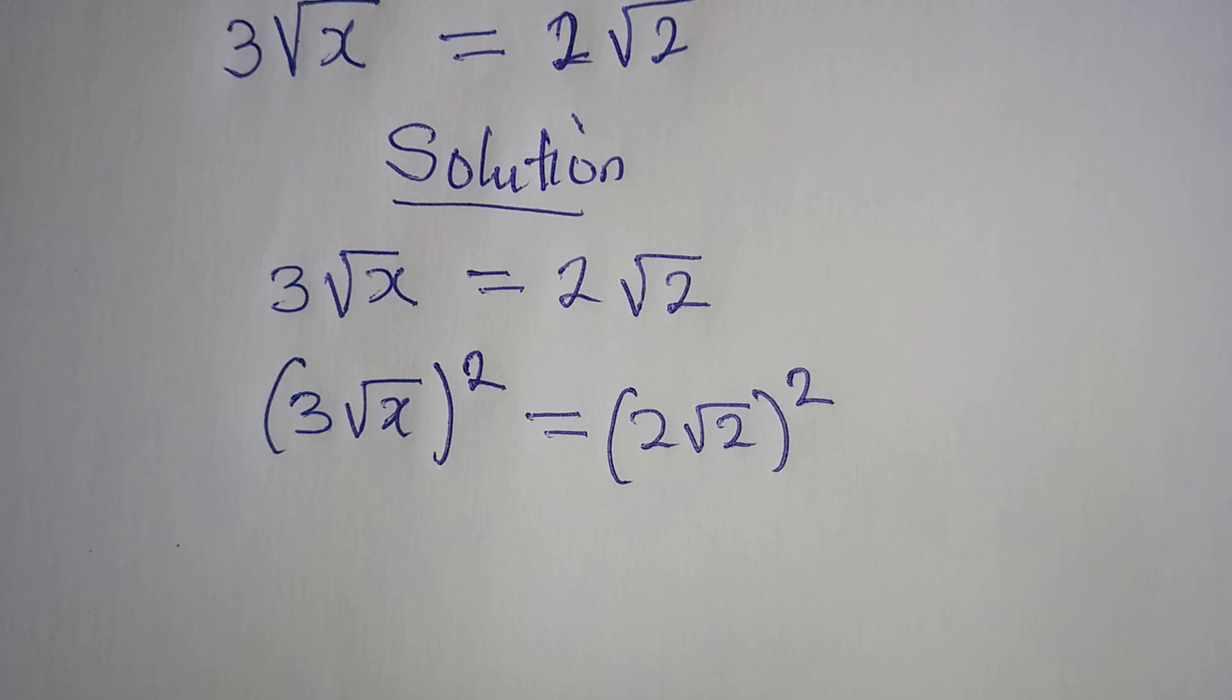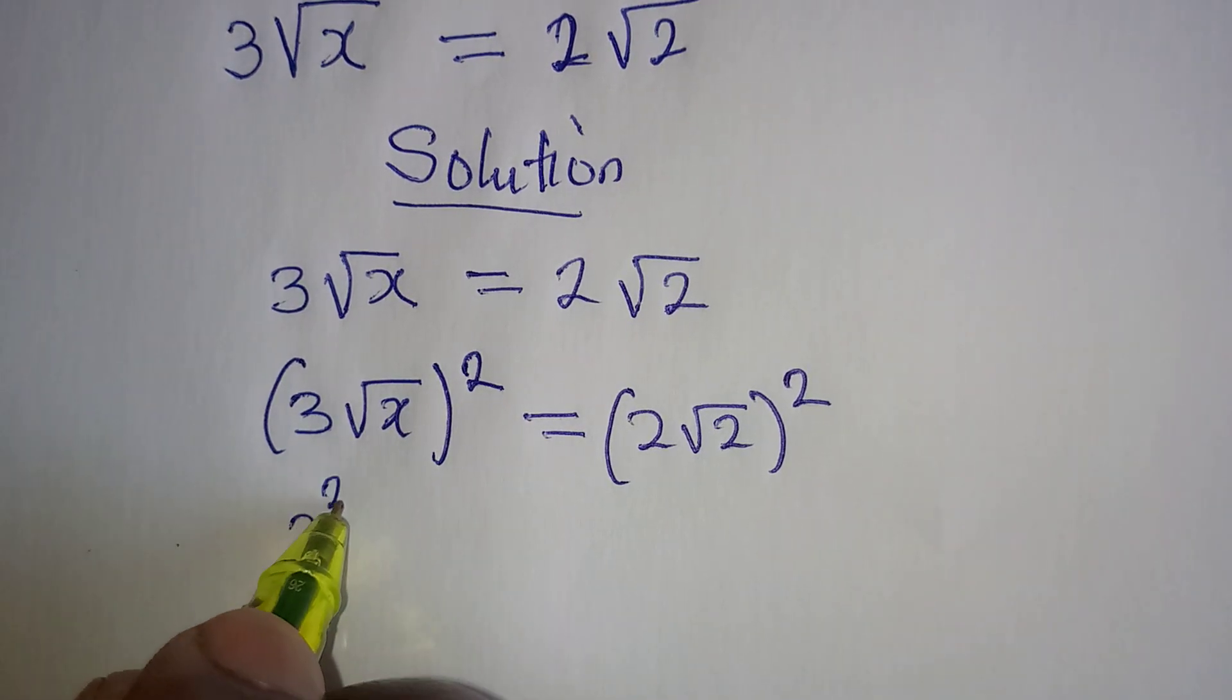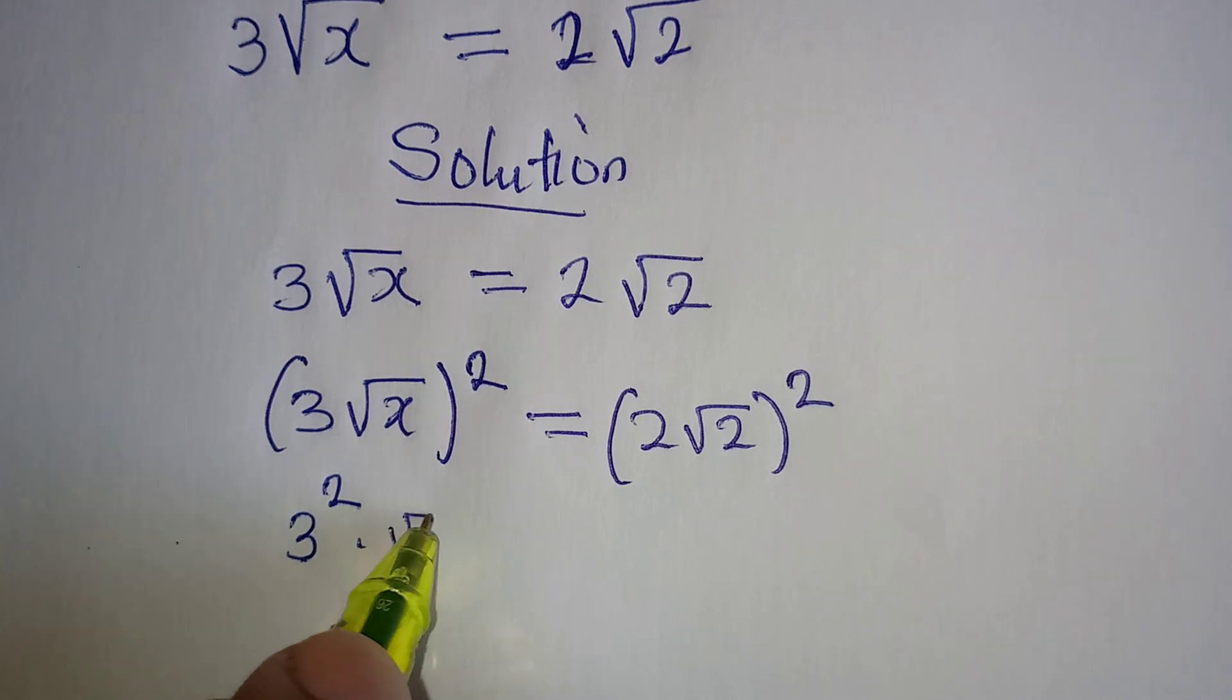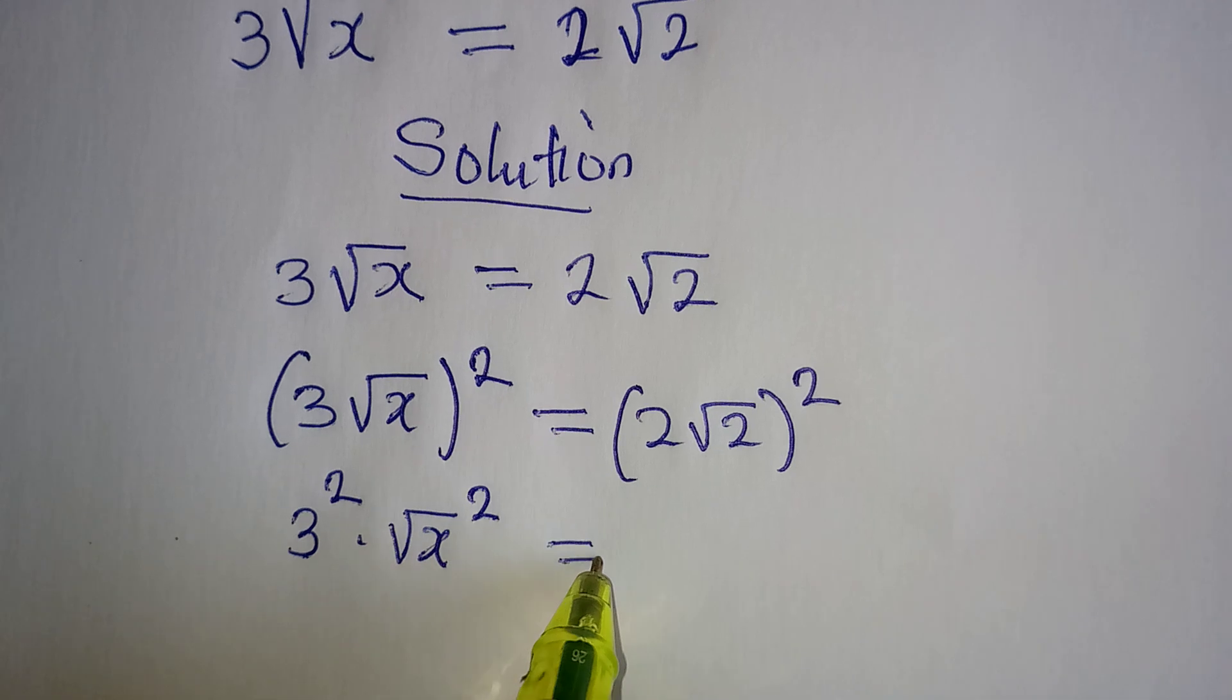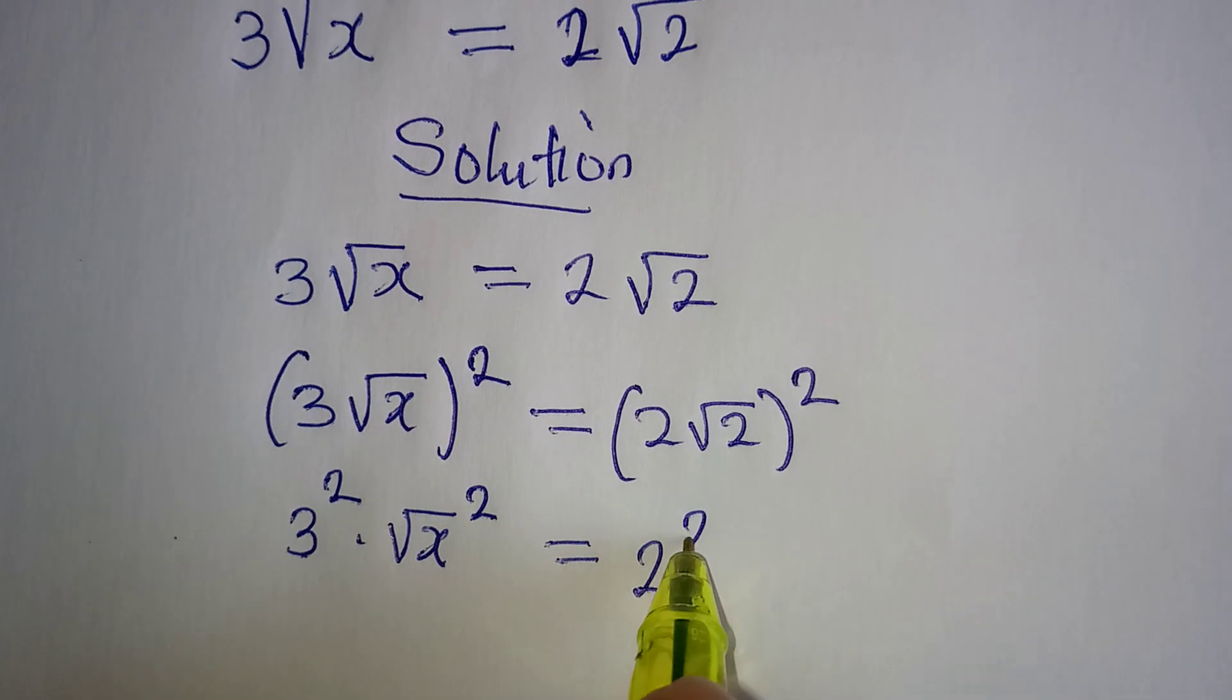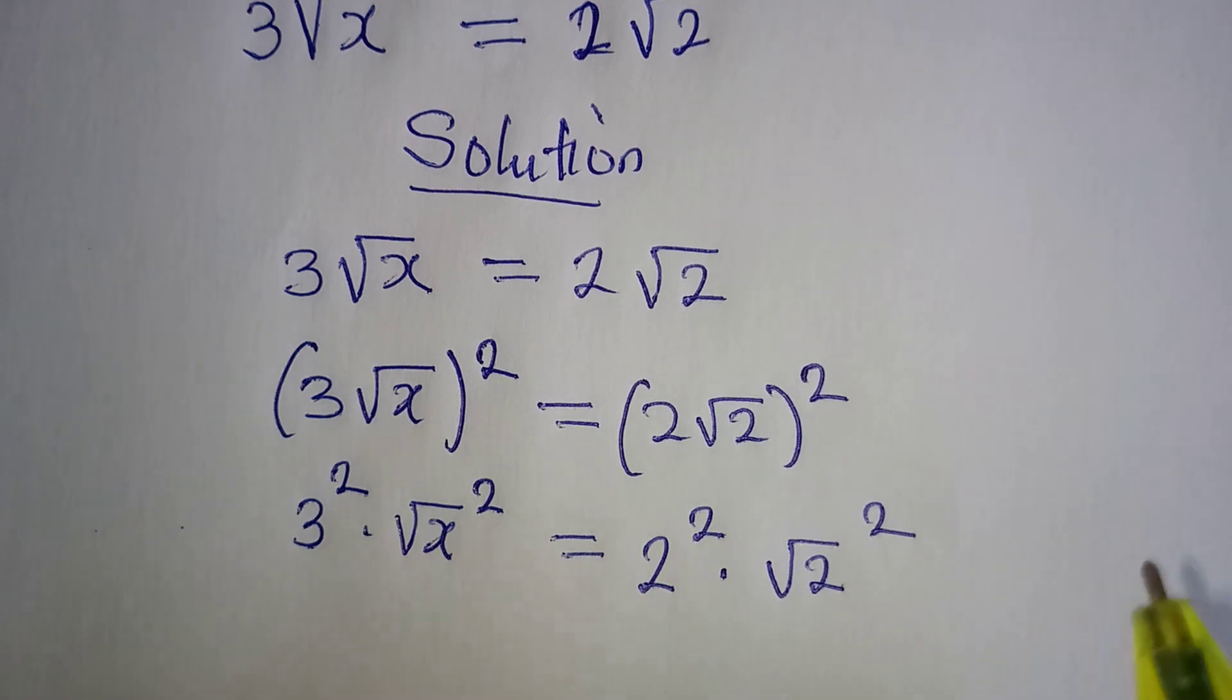So from here, we are going to have 3 squared multiplied by square root of x squared. Then on the right hand side, we have 2 squared multiplied by square root of 2 squared.